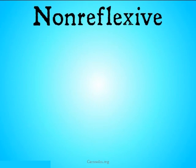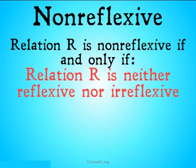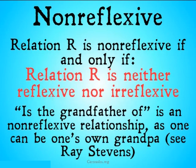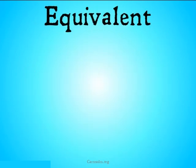Non-reflexive relations — hopefully you can get a sense of what this is going to be. Relation R is non-reflexive if and only if relation R is neither reflexive nor irreflexive. An example might be 'is the grandfather of,' which is a non-reflexive relationship, because while generally one isn't one's own grandfather, as we learned from Ray Stevens, one can be one's own grandpa. Check out the song if you don't know it.